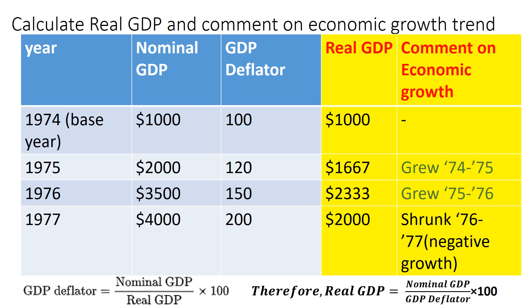Now let's move on to the fifth column of this table titled 'Comment on Economic Growth.' You may be required to comment on economic growth over those four years, but that comment is only valid once you have the real GDP data. Now that we have real GDP data, we should be able to comment on what happened to economic growth year to year. The base year is 1974, so no comment there.